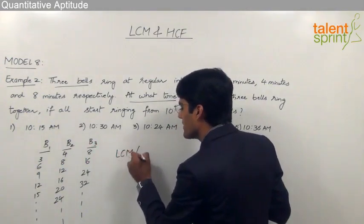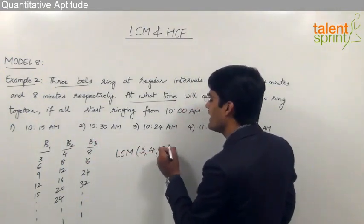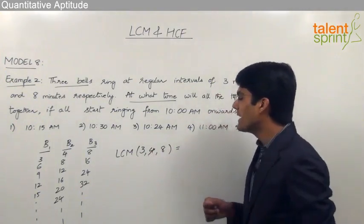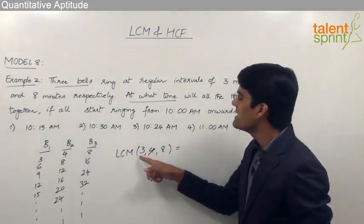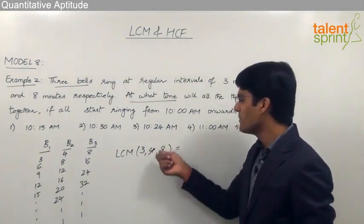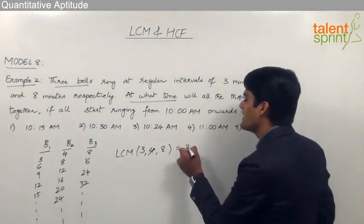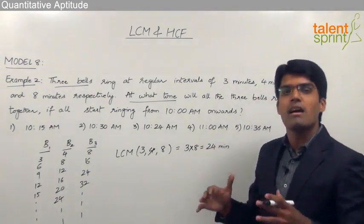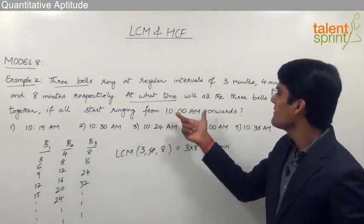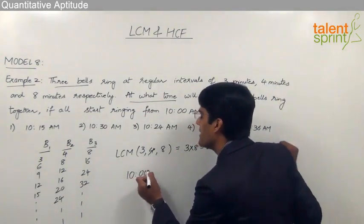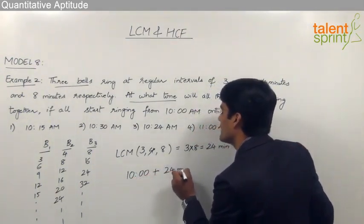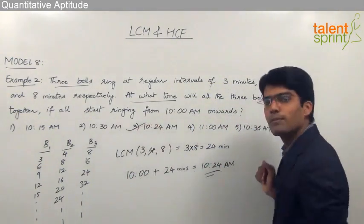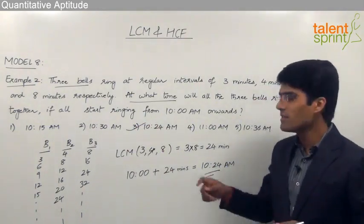The answer is the LCM of the regular time intervals: 3, 4, and 8 minutes. Since 4 is a factor of 8, we only need LCM of 3 and 8. Since 3 is a prime number, the LCM is simply 3 × 8 = 24 minutes. So all three bells will ring together after 24 minutes. Starting from 10 am, that gives 10:24 am, which is option number 3.